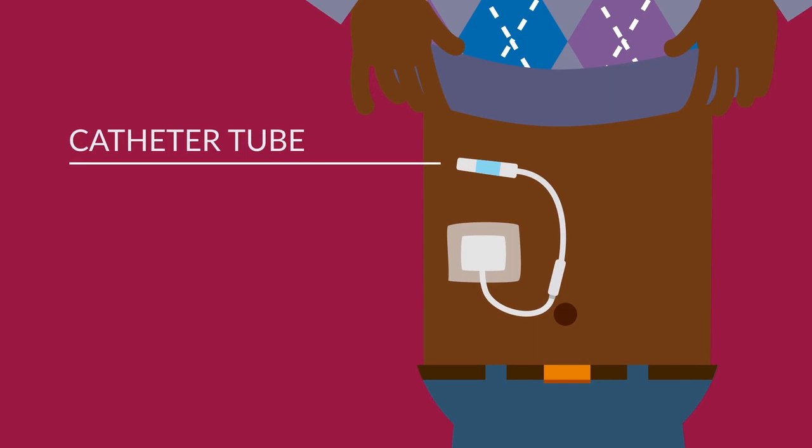Peritoneal dialysis is another way to help the kidneys remove extra fluid. Each PD treatment removes waste and fluid from the body through the catheter tube, almost like you're urinating.